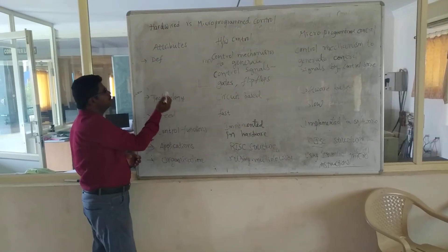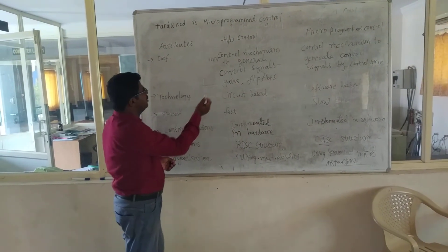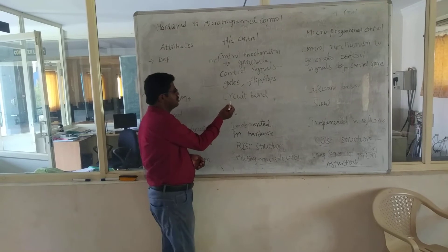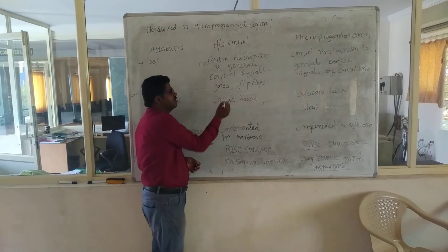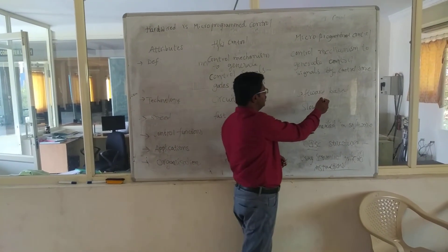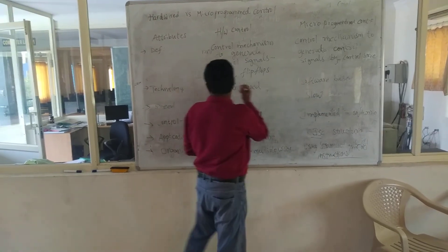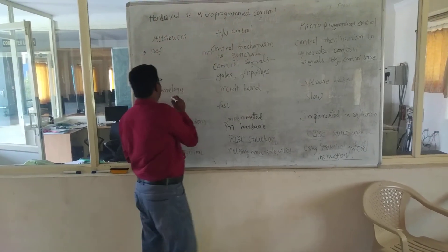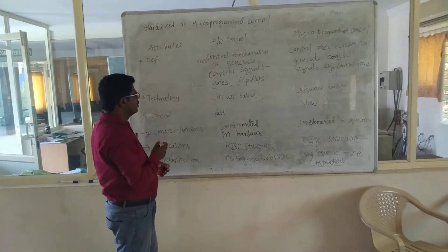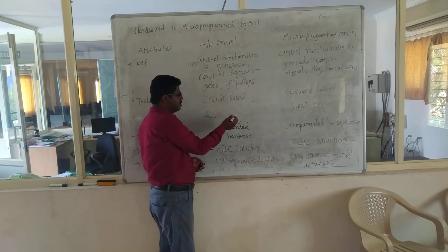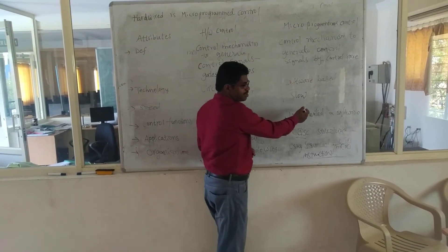When it comes to cost, hardware control is always costly, whereas microprogrammed control is very cheap and easy. Lastly, regarding the chip area: hardware control occupies more space, while microprogrammed control occupies less space.